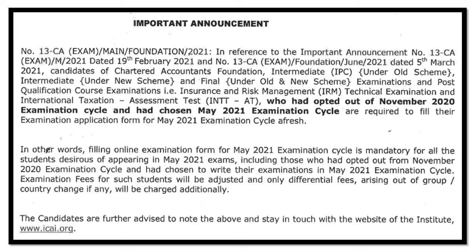Recently, as mentioned in two notifications — one that came on 19th February and one that came on 5th March — basically these are date sheets. The one from 19th February was for Inter/Final, and the one from 5th March was for Foundation. I'll put links to both in the description box below. Related to those notifications, students appearing in May 2021 — including those who opted out of November 2020 — must fill the exam form. Filing the examination form for May 2021 is mandatory for all students.